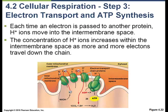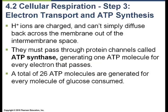As more and more electrons go down the electron transport chain, more and more hydrogens accumulate in the intermembrane space. As a result of diffusion — the movement of particles from high to low concentration — these hydrogen atoms want to go back into the matrix to move down their concentration gradient. But they can't because of the inner membrane. This is where the production of ATP actually comes in — the hydrogens move through a protein called ATP synthase.